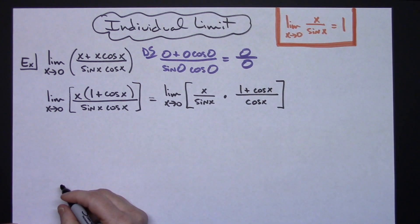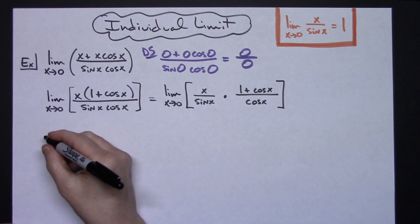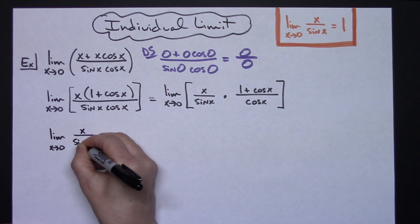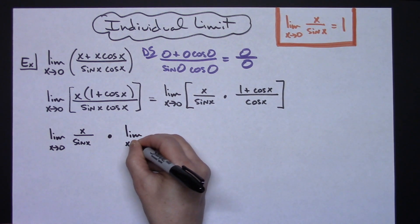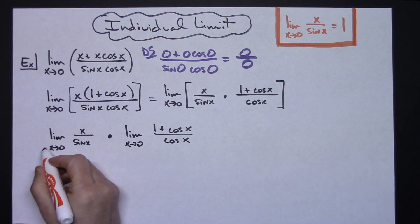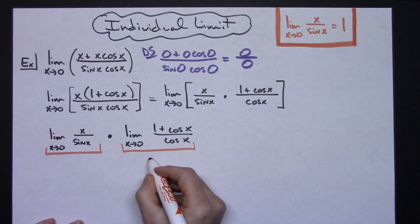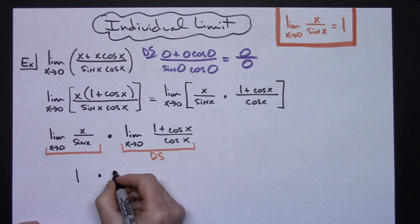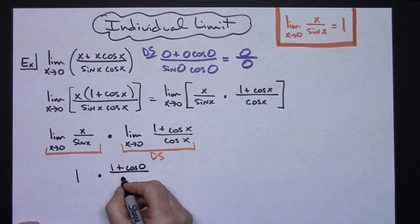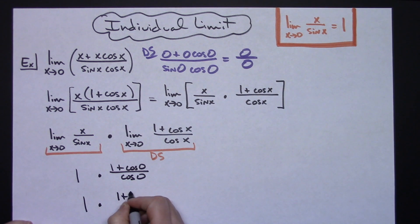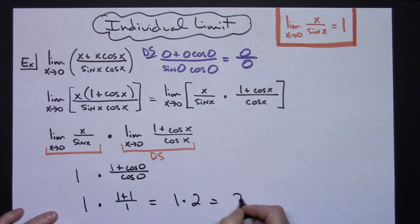Now I can use properties of limits and take the limit of both factors individually. So it's the limit as x approaches 0 of x over sine x, times the limit as x approaches 0 of (1 + cosine x) over cosine x. We know from that property the first limit is just 1. For the second, direct substitution gives 1 plus cosine 0 over cosine 0, which is 1 plus 1 over 1, which is 2. So the overall limit is 1 times 2, which equals 2.